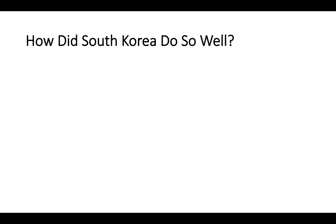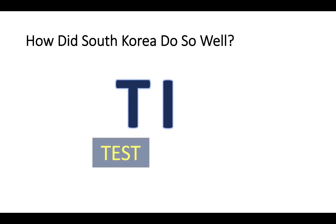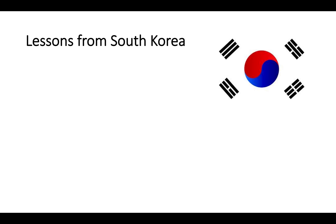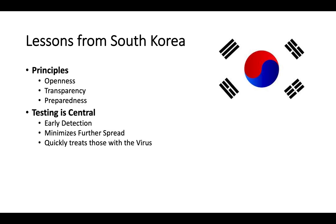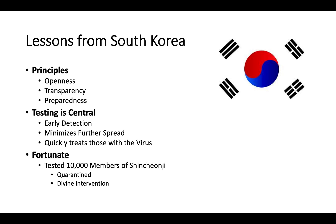Why did South Korea do so well? They used information technology to track people, and they tested and isolated people. Their principles were openness, transparency, and preparedness — they were prepared from the moment this virus was in China. They realized testing was central to early detection, minimizing further spread, and isolating those with the virus. Finally, they were fortunate because of a group called the Shincheonji, a religious sect in South Korea through which the virus spread rapidly. They were able to quarantine this group very early on, and some leaders called this a divine intervention — because without it, they would have been out of control like many other countries.